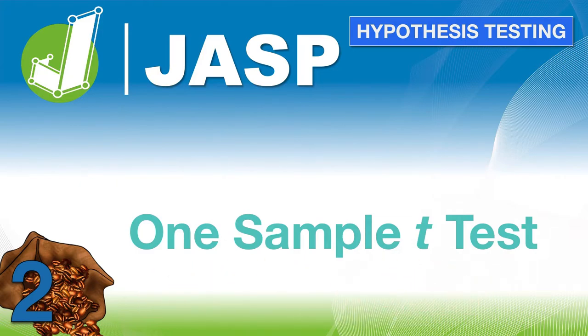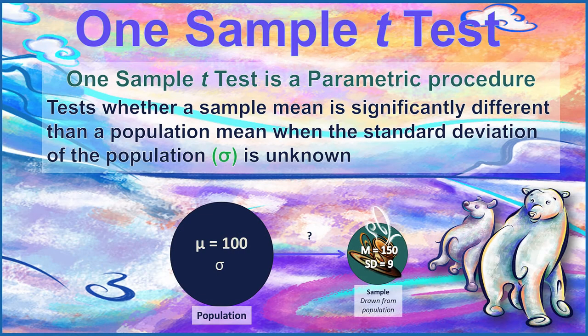Let's begin by asking, what is a one-sample t-test? It is a parametric procedure, meaning that we are using values from a population to compare a sample, and it tests whether a sample mean is statistically significantly different from the population mean, but we use the one-sample t-test when we do not know the standard deviation of the population.